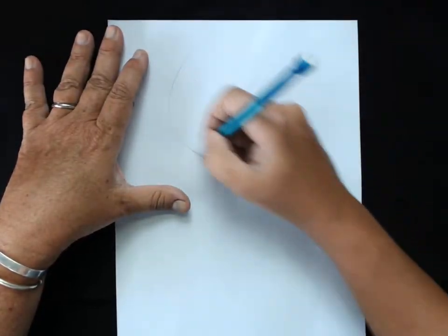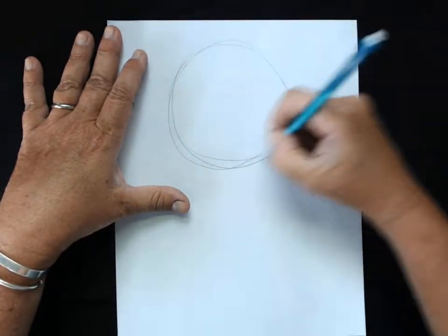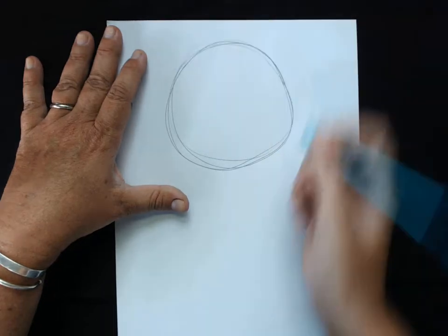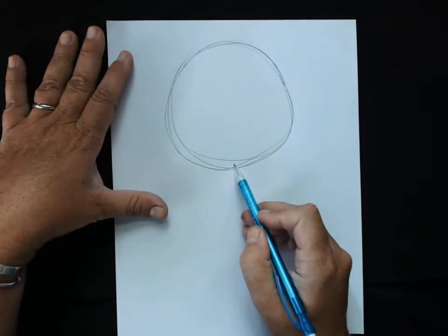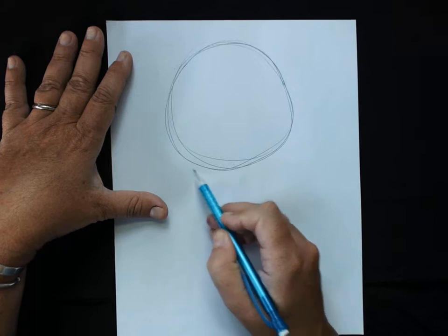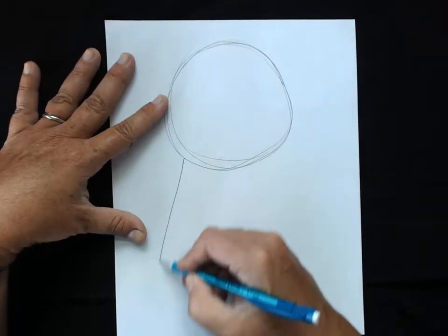I'm going to make a big circle up near the top of my paper. Now I'm going to go from the bottom of my circle and go out, and then we're going to do a little angle.